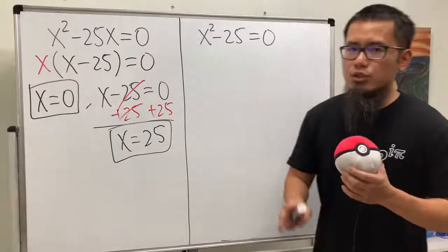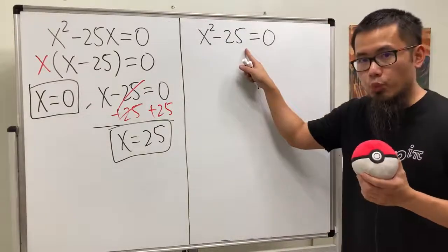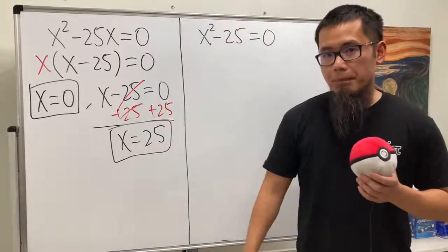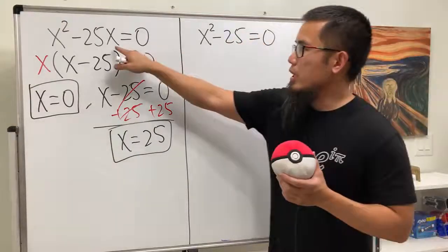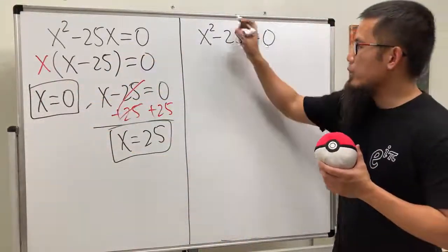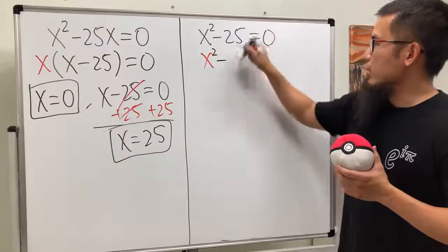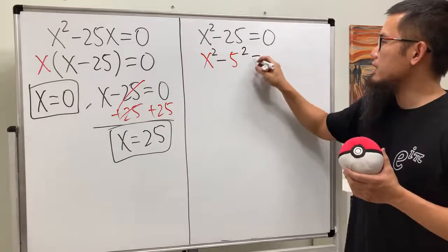For the second question, we actually have two ways to do it. The first way is, we can factor this as well, but we will have to use the difference of two squared method, because we don't have the x right here. This right here, we do, so we can just factor that out, right? But for this one, we can look at this as x squared, and then minus the 25, it's the same as 5 squared, and that's equal to 0.